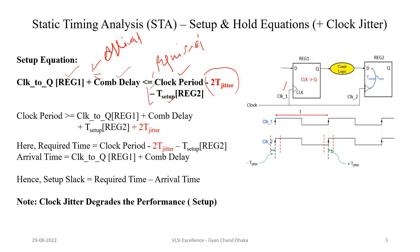How do we decide the worst case clock jitter scenario? In the ideal case, this is our launch edge and this is our capture edge. The propagation delay from launch flip-flop to capture flip-flop is fixed — equal to clock-to-Q delay plus combinational delay. In the ideal case, the required time is the clock period minus T_setup of the capture flip-flop. This is our minimum required time. In other words, the propagation delay should be less than clock period minus T_setup.